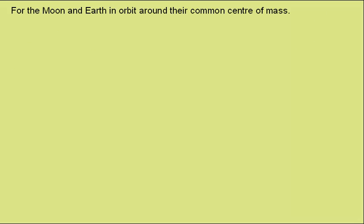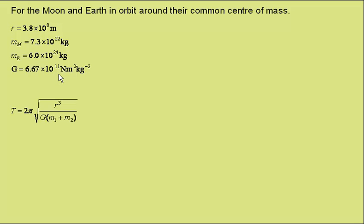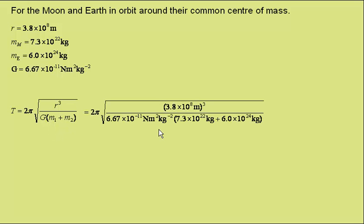Although not a binary star system, I'll again use the example of the Moon and Earth in orbit around their common centre of mass. Here we have the values. They have a separation of 3.8 × 10^8 metres. This is the mass of the Moon and the Earth and the gravitational constant. This is the expression we've just found. And so if we put in the values given, this gives a time period of 2.3 × 10^6 seconds, which gives us the correct value of around 27 days. Thank you.